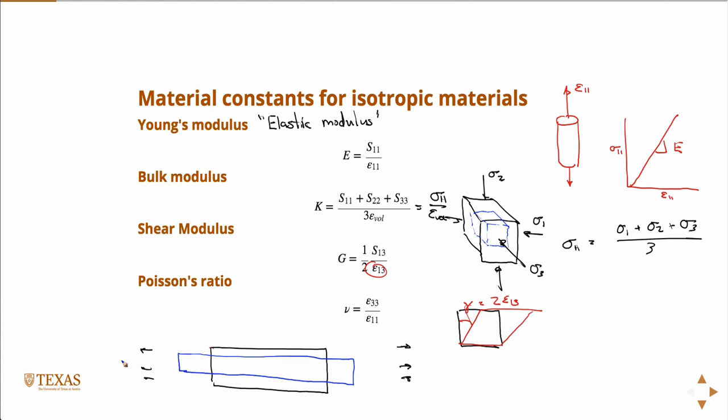The Poisson ratio for all natural materials is always a positive number. Although in man-made materials, there's an interest for some materials to have actually negative Poisson ratios. What does that imply, a negative Poisson ratio?